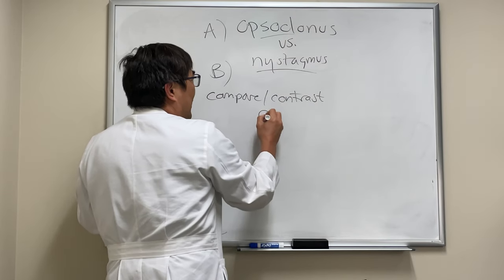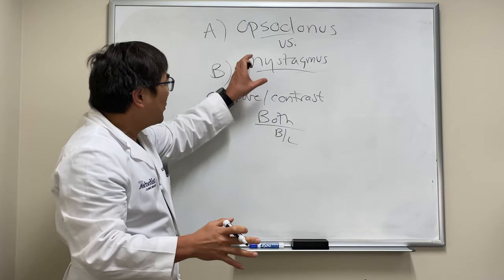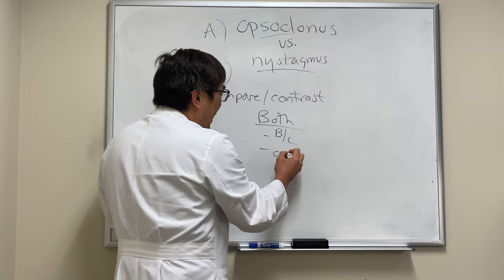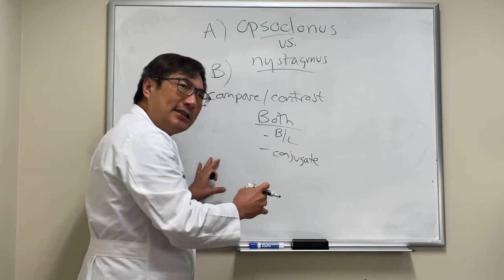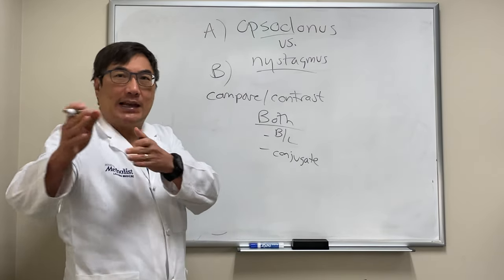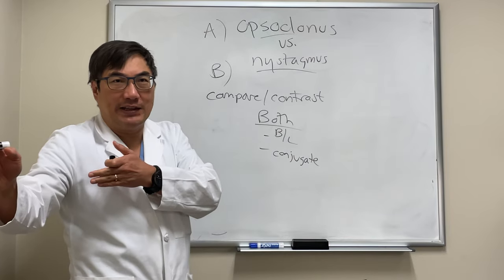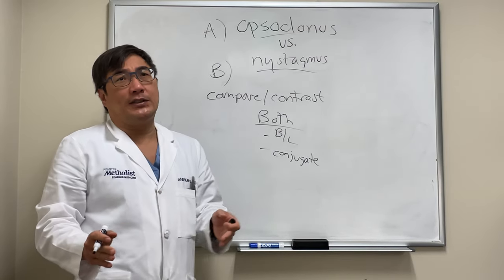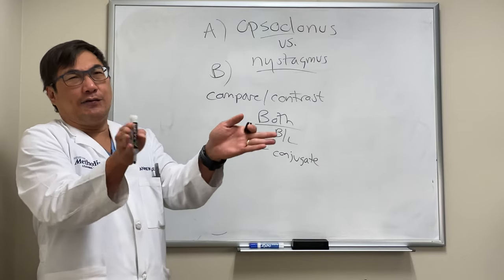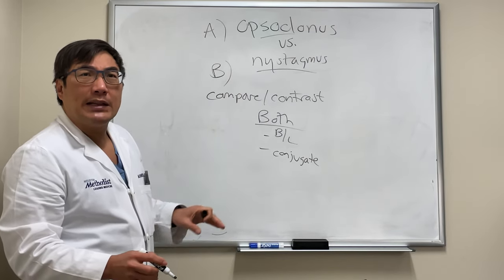Both opsoclonus and nystagmus are bilateral, meaning both eyes are moving. There is some unilateral nystagmus, but there's no unilateral opsoclonus. Both can be conjugate — moving in the same direction. Most nystagmus has a fast phase beating in the same direction in both eyes: downbeat, upbeat, or right-beating. Nystagmus is named for the fast phase, though the pathologic phase is the slow drift.